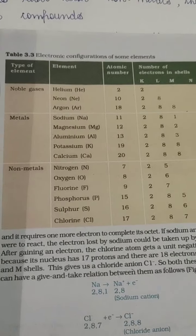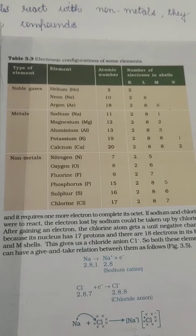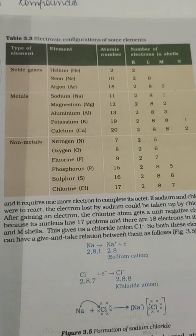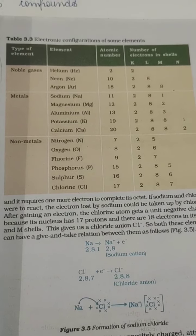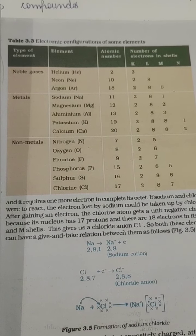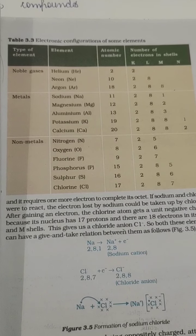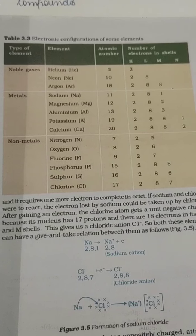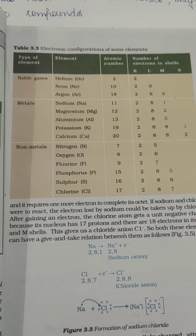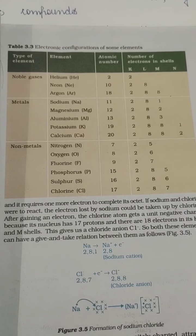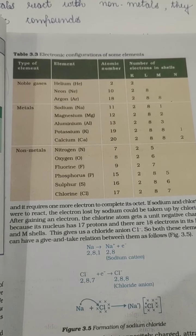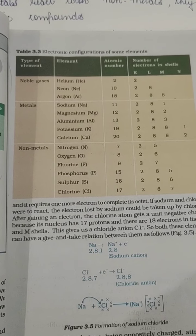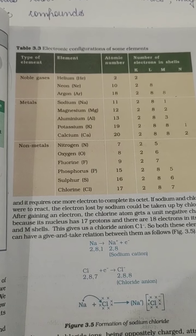I would like to tell you more about this with the help of your NCRT book. In your book there is table 3.3. In this table, you have been given information about noble gases, metals and non-metals. Noble gases are those elements which have completed their octet structure, or we can say they have complete electrons in their outermost shell. Whereas metals have 1, 2 or 3 electrons in their outermost shell. And non-metals have either 5, 6 or 7 electrons in their outermost shell. Carbon is a non-metal but it has 4 electrons in its outermost shell.